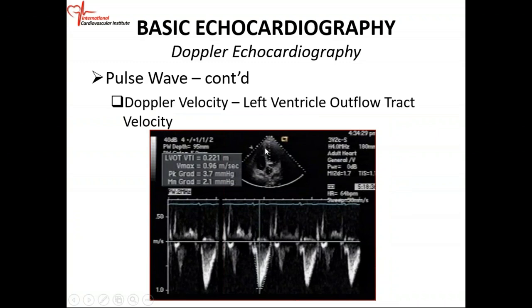This is the apical five-chamber view. Your cursor is right there, and the sample volume is in the left ventricle outflow tract. You press your pulse wave button and you get a spectral envelope — it's below the baseline and it's in systole. Systole is from the beginning of the QRS to the end of the T wave. You get periodic systolic flow because blood flows from the left ventricle across the LVOT, across the aortic valve, into the aorta. This is your LVOT velocity or LVOT envelope — the left ventricle outflow tract envelope.